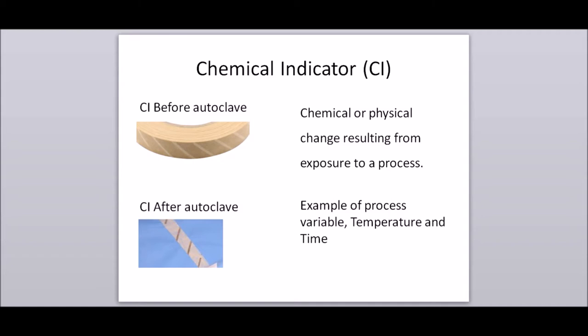Chemical indicator: a test system that reveals a change in one or more predefined process variables based on a chemical or physical change resulting from exposure to a process. Examples of process variables are temperature and time.